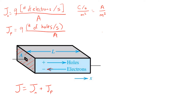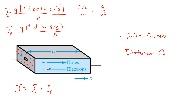There are two main mechanisms that give rise to the movement of carriers in a semiconductor, and both are important in understanding the flow of current in semiconductor materials. They are drift current and diffusion current. So let's look at each in turn.